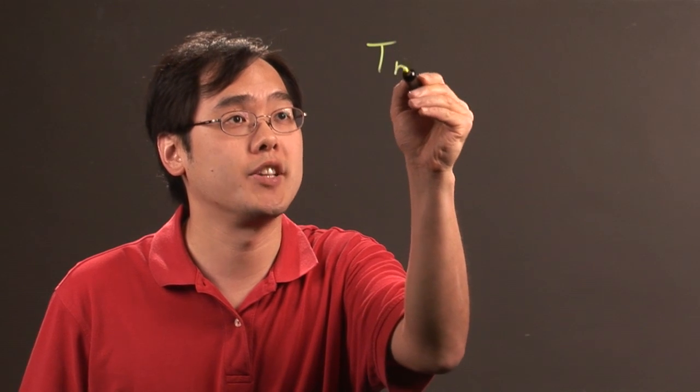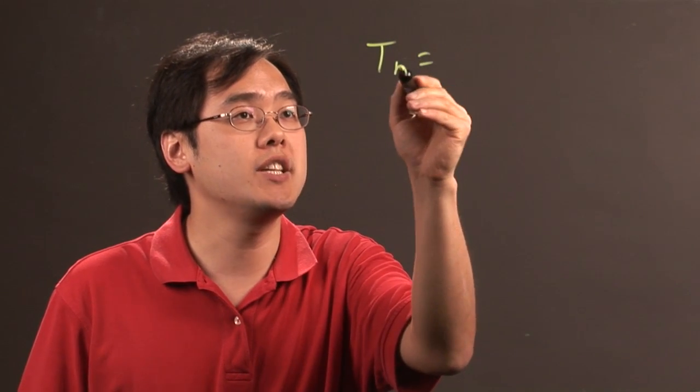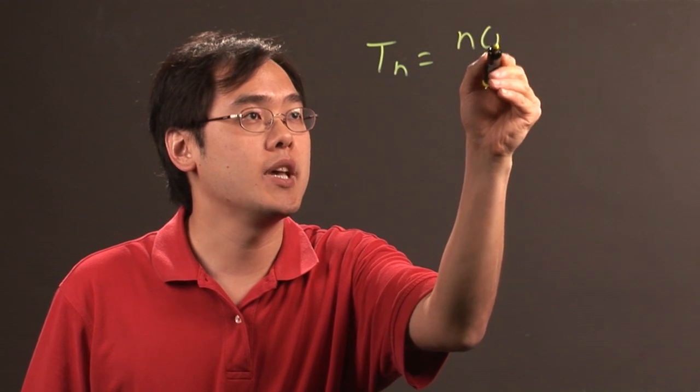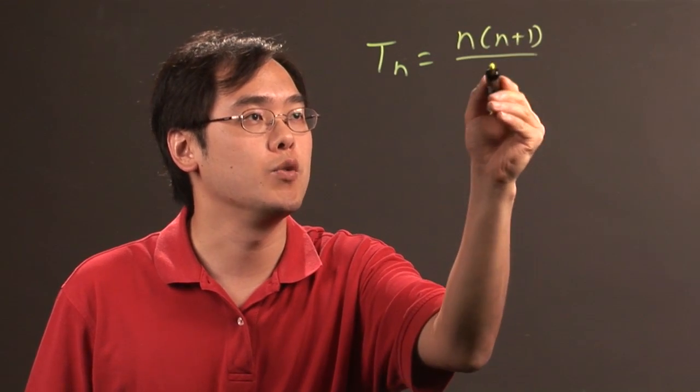So here's the formula and we'll do a couple of examples. So you have the equation T sub n, T is triangular, n's number, and the formula is n times n plus 1 over 2.